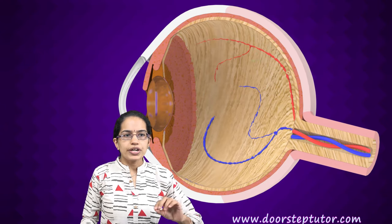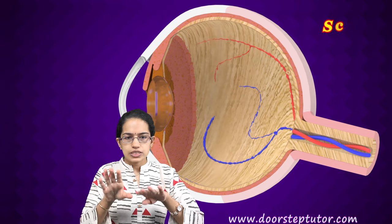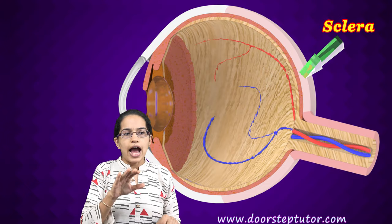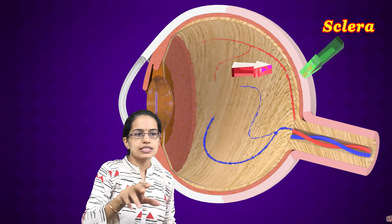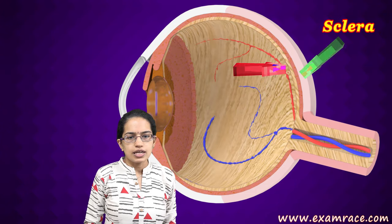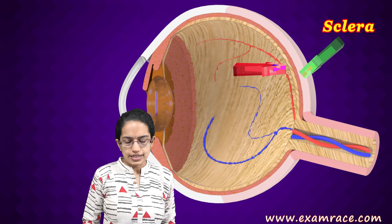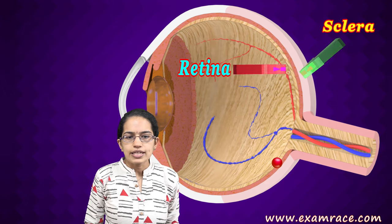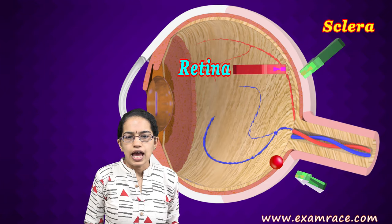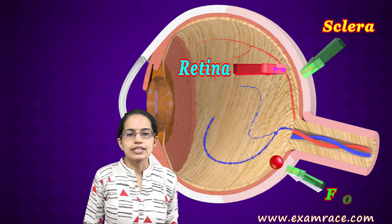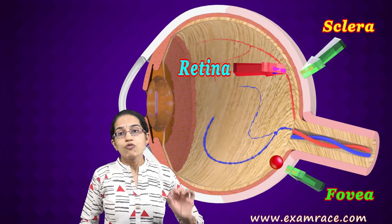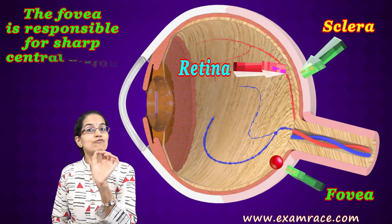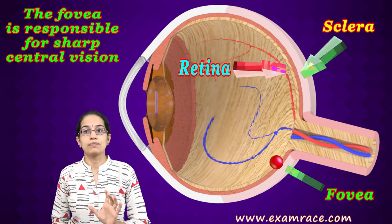As we have already talked about the sclera, which is the outermost layer, within this sclera we have other layers including the retina. On the retina, we have the fovea. Fovea is a point where we have the brightest, clearest vision of all.